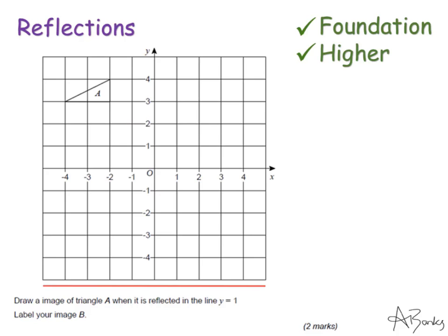This question says, draw an image of triangle A when it is reflected in the line Y equals 1. Label your image B. In this question they've not actually drawn on for me where the line of reflection is, but they've told me that it's the line Y equals 1. So I need to draw this on first.